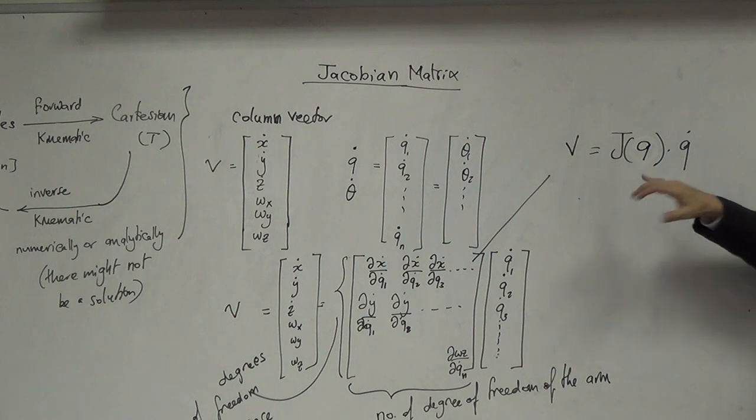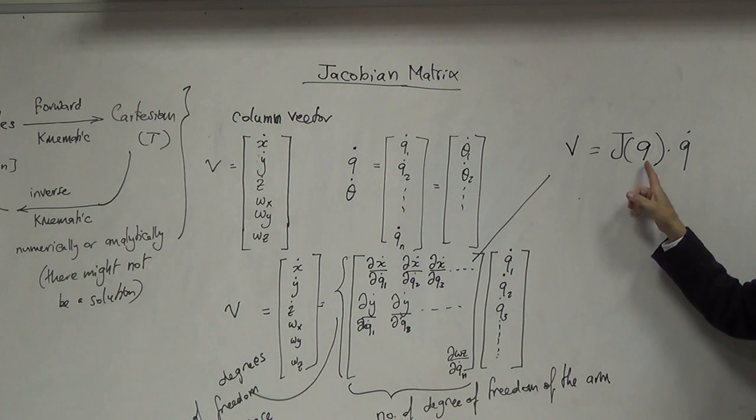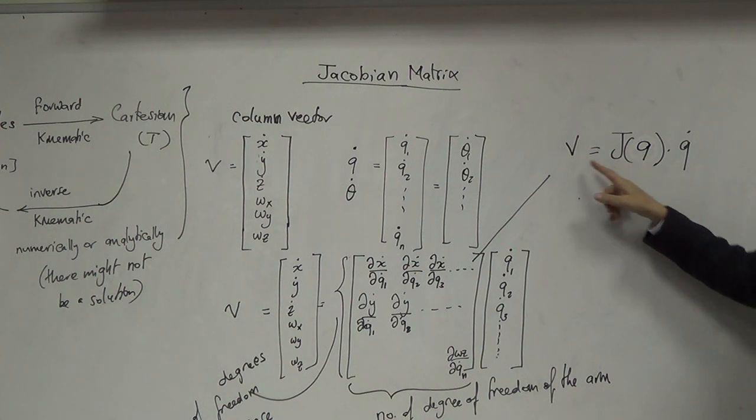فهذه في position معينة Q ما رح يعطي نفس الجواب في position ثاني. إذا عرفت هاد وعرفت هاد راح اضرب هذول التنين في بعض رح يعطيني السرعات في Cartesian space اللي هي الفكتر هذا اللي موجود هون.